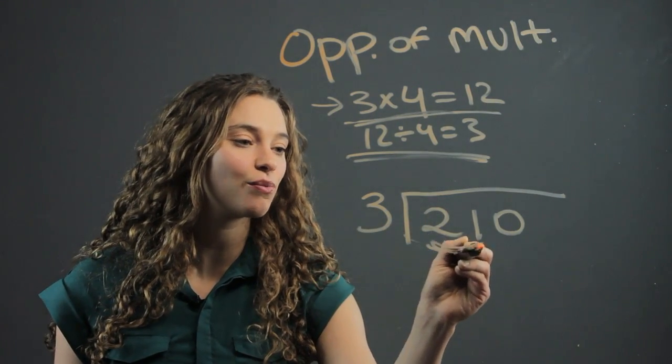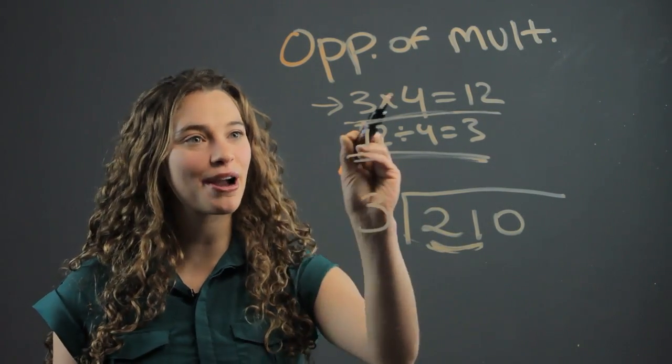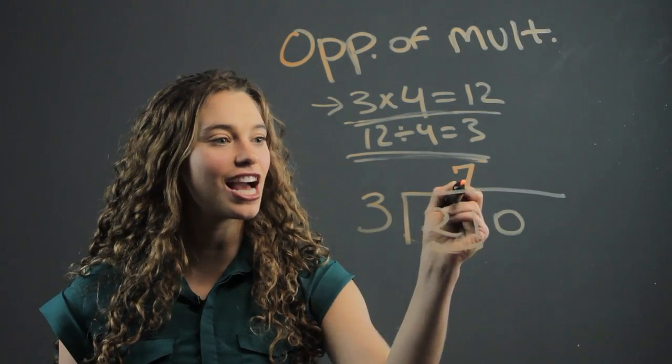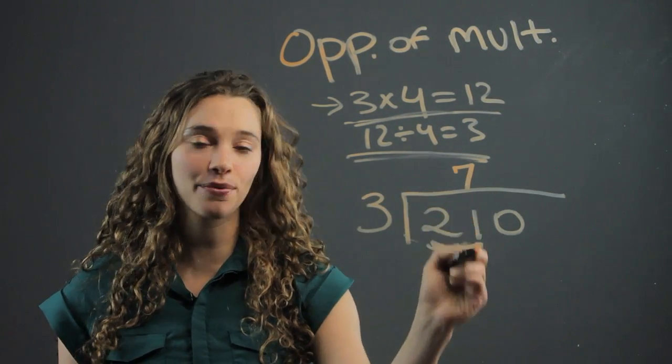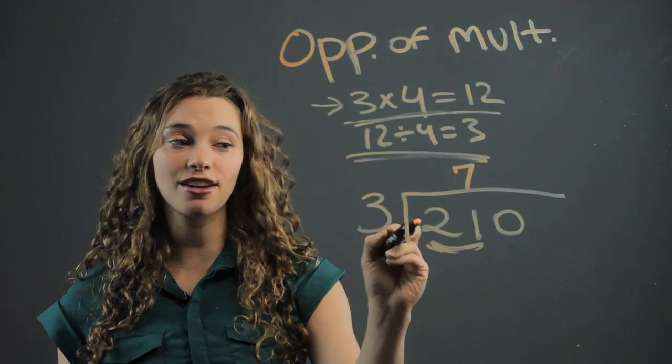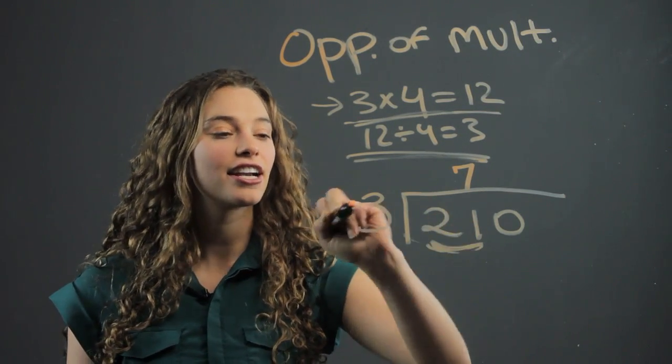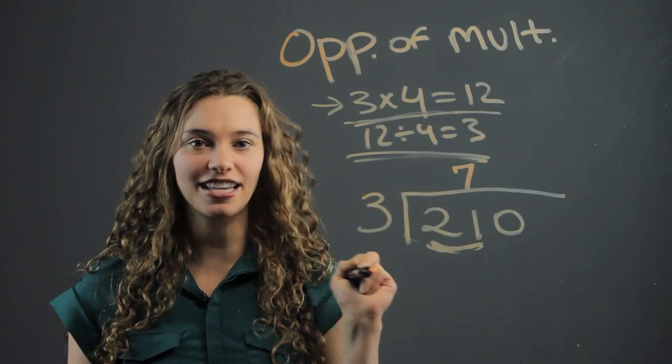Three goes into twenty-one. Yes, we know by our multiplication times tables that three goes into twenty-one seven times. So we put a seven right above the one. Make sure they line it up. It's not above the two because nothing went into two. It's above the one because it goes into twenty-one. We put a seven right there.